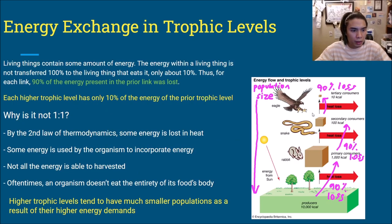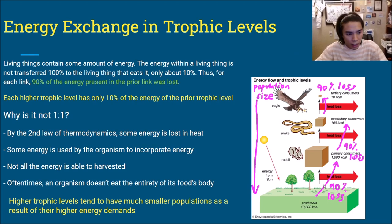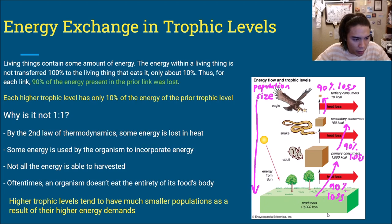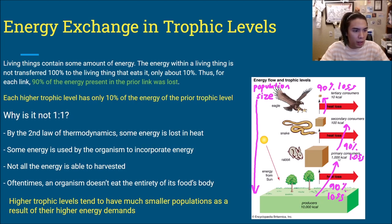Let's talk about energy exchange in trophic levels. The energy of a living thing is not transferred 100% to the organism that eats it — only about 10%. So for each link, 90% of the energy is lost. Each higher trophic level has only 10% of the energy of the prior level. Producers (plants) might have 10,000 kilocalories, but after being eaten by primary consumers, only 1,000 kilocalories remain — a 90% loss. Going up: 10,000 → 1,000 → 100 → 10.